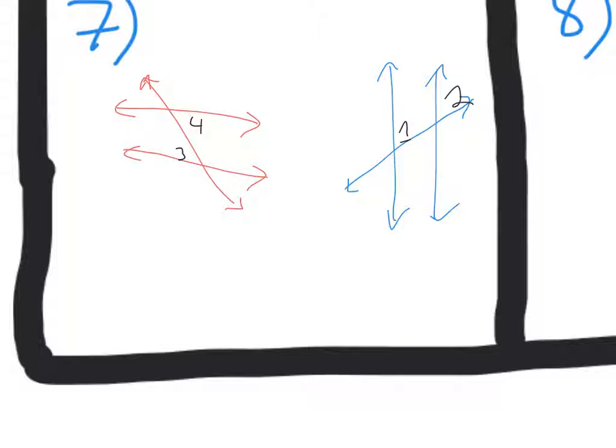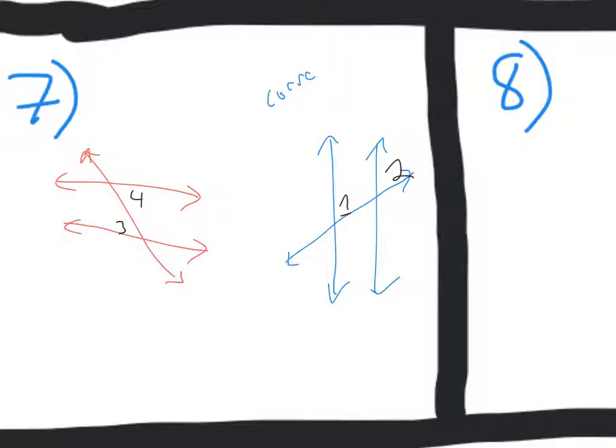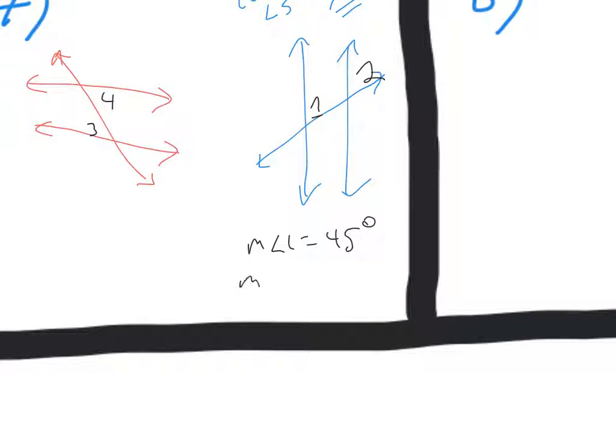Then they give you some important information. Angle 1 and angle 2 are corresponding angles. So 1 and 2 are corresponding. That means they actually have to be equal or congruent since corresponding angles are congruent. And they tell us that M1 equals 45 degrees and M2 equals x plus 25.